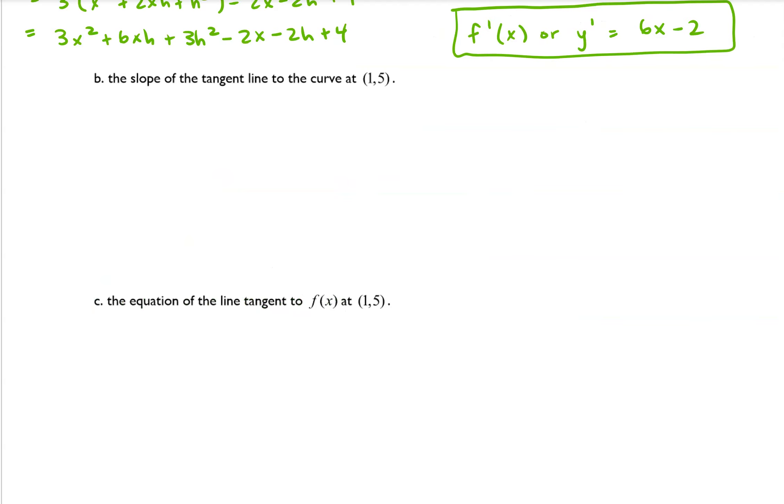So I want to find the slope of the tangent line to the curve at the point (1,5), and so I want to evaluate f prime of 1. And our derivative function was 6x minus 2, so I'm going to replace that x with a 1.